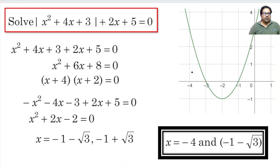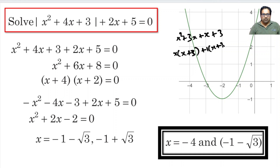So, x squared plus 4x plus 3 — we can write it as x squared plus 3x plus x plus 3, which means x(x+3) plus 1(x+3), which means (x+1)(x+3) equals 0. So, the roots are minus 1 and minus 3.